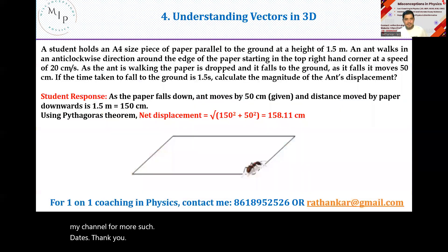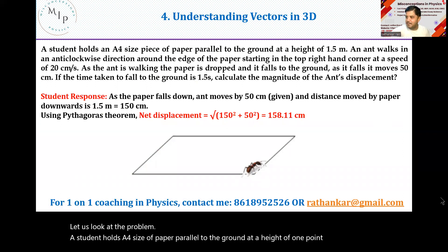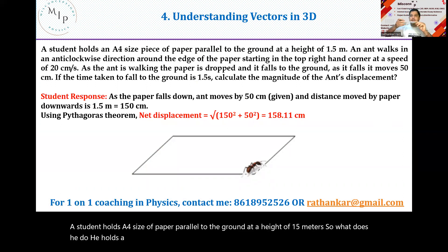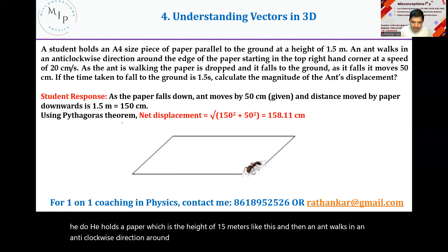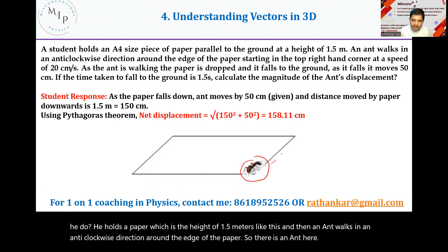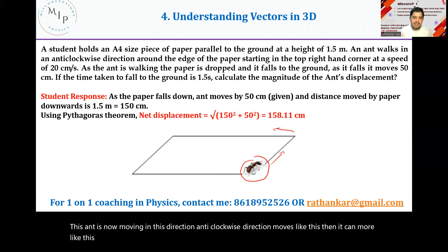Now let us look at the problem. A student holds an A4 size paper parallel to the ground at a height of 1.5 meters. He holds a paper at the height of 1.5 meters like this. And then an ant walks in an anti-clockwise direction on the edge of the paper. The ant is moving anti-clockwise, moving only on the edge of the paper.